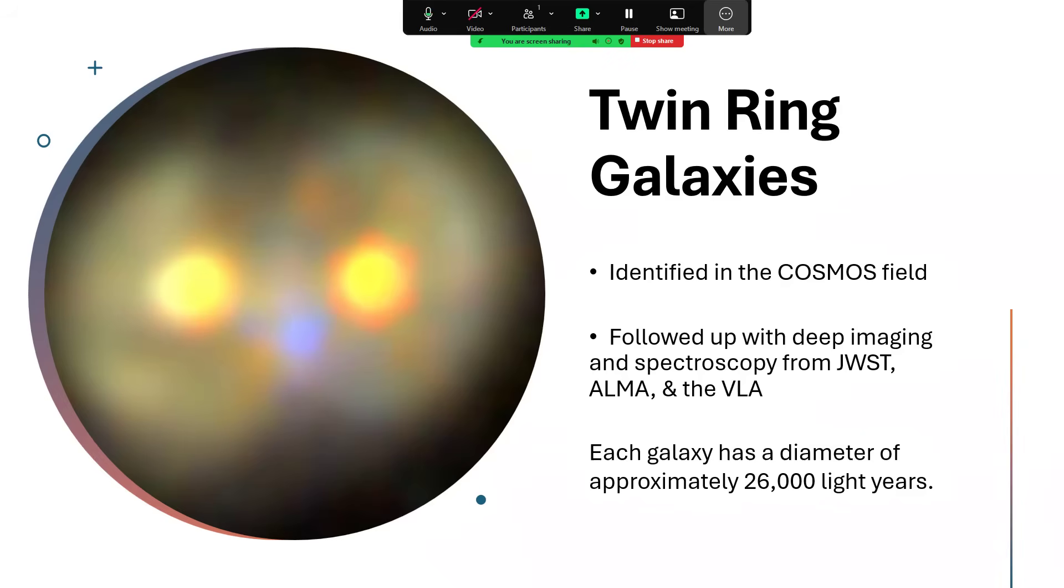It's been possible to work out not only the distance of 9.1 billion light years but from that and the size that it appears, we can say that each of these two galaxies that are forming the eyes of the Cosmic Owl are about 26,000 light years in diameter.